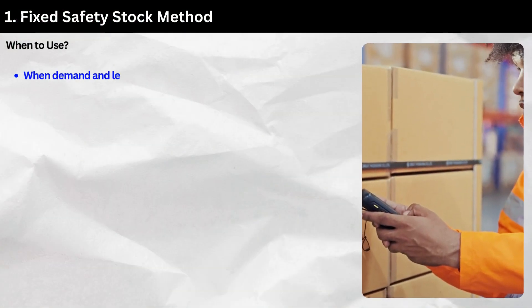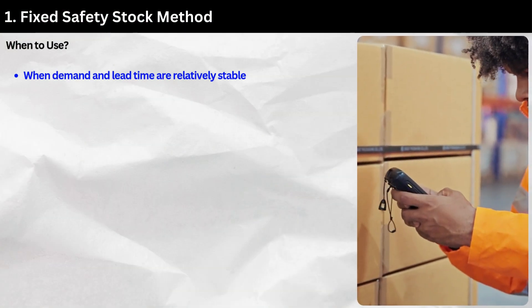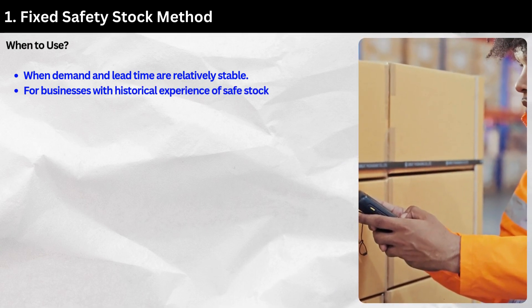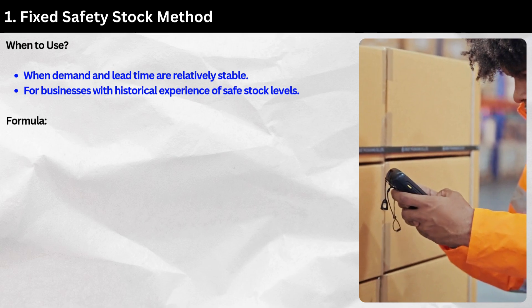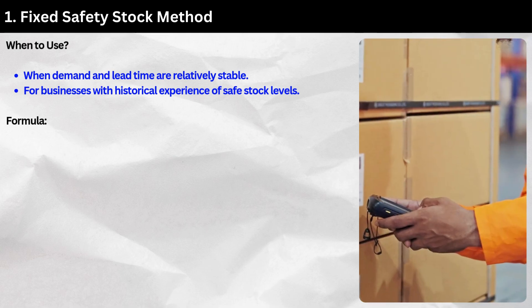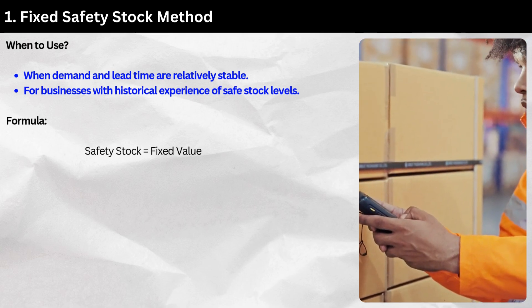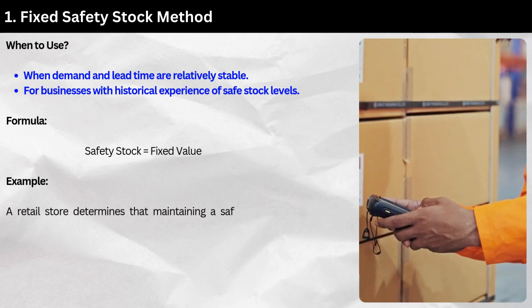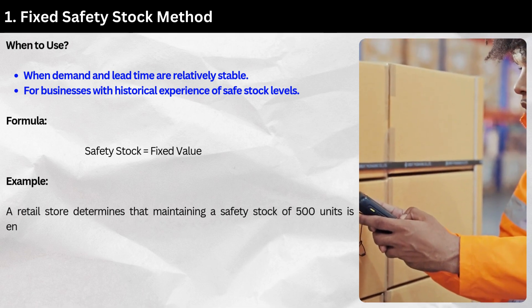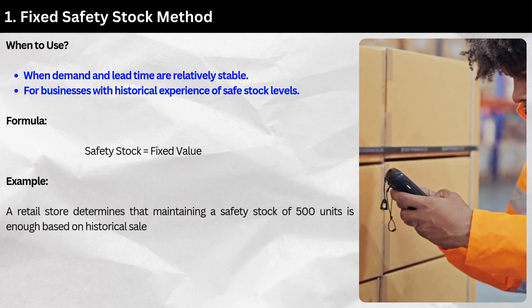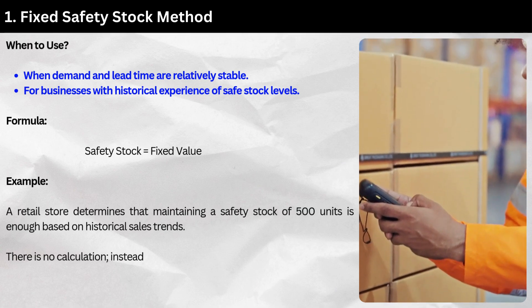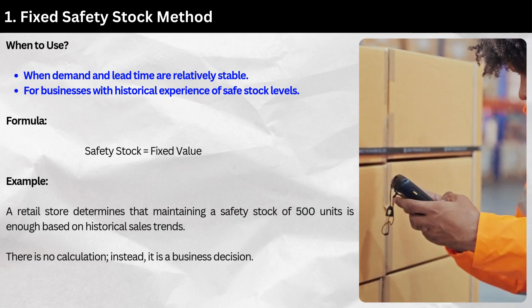Method 1: Fixed safety stock method. When to use: when demand and lead time are relatively stable, or for businesses with historical experience of safe stock levels. Formula: Safety stock equals a fixed value. Example: A retail store determines that maintaining a safety stock of 500 units is enough based on historical sales trends. There is no calculation — it is a business decision.